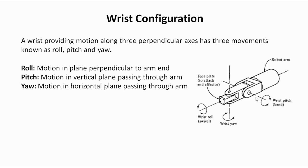The third motion is yaw. Yaw is the motion in the horizontal plane passing through the arm — that is, yaw is the rotation about the vertical axis.